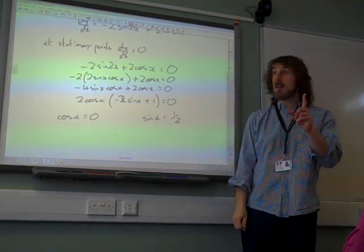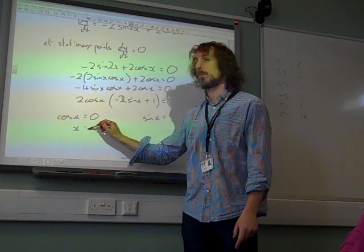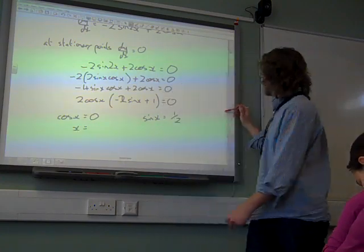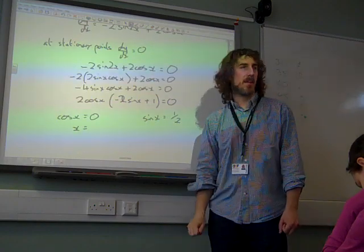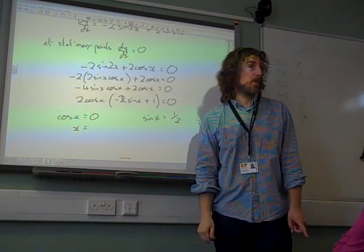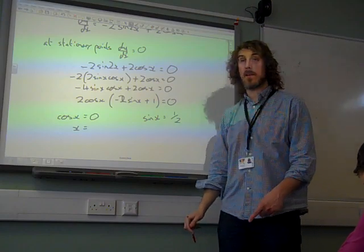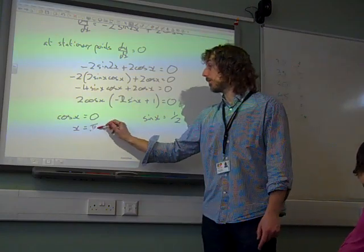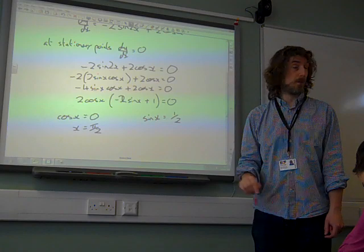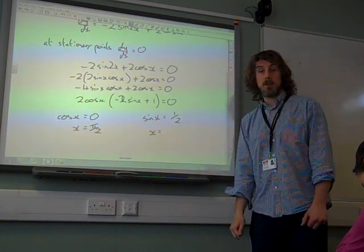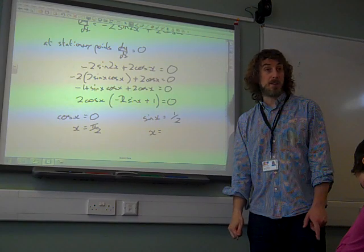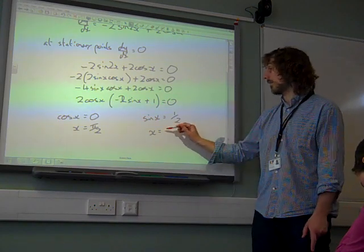So these are the equations we're now solving. If cos x is 0, then x is, well hang on, we were looking between 0 and pi. So if cos x is 0, the only value between 0 and pi that that would be would be pi by 2. If sin x is a half, you can either remember this or do this in your calculator if you want to. You get pi by 6, don't you, if we do inverse sine of a half.